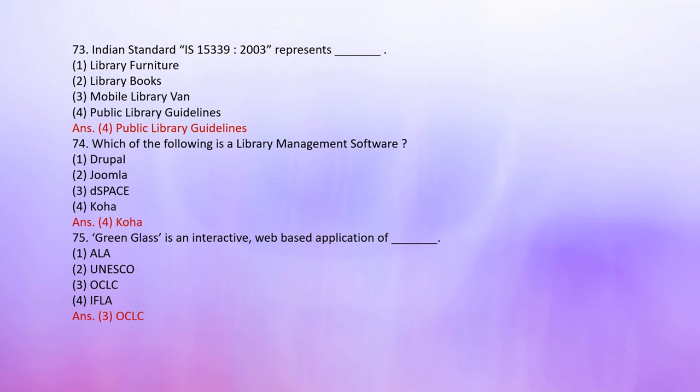Number 75: Green Glass is an interactive web-based application of — 1. ALA, 2. UNESCO, 3. OCLC, 4. IFLA. The correct answer is OCLC.